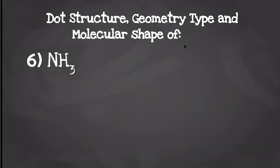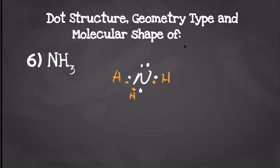For our next one we have nitrogen trihydride. Nitrogen is going to have five valence electrons and each hydrogen is going to have one, so when we draw our dot structure it should look something like this. We have one center molecule and three things attached to it, but we can't forget that lone pair on top. That's going to give us a geometry type of AB3E with a molecular shape of trigonal pyramidal.